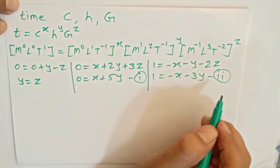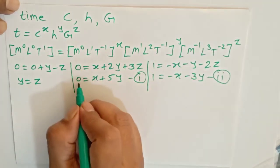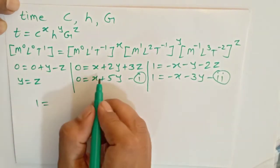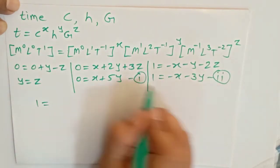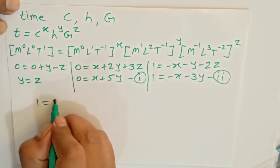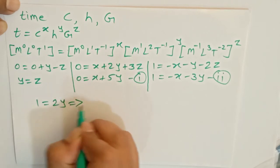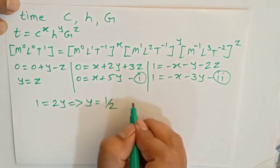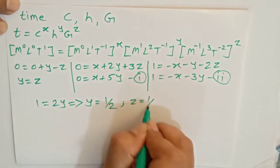Adding both equations: 0 plus 1 equals 1. The x terms cancel, plus 5y minus 3y gives 2y. So we get y is equal to half, and we can say z also equals half.